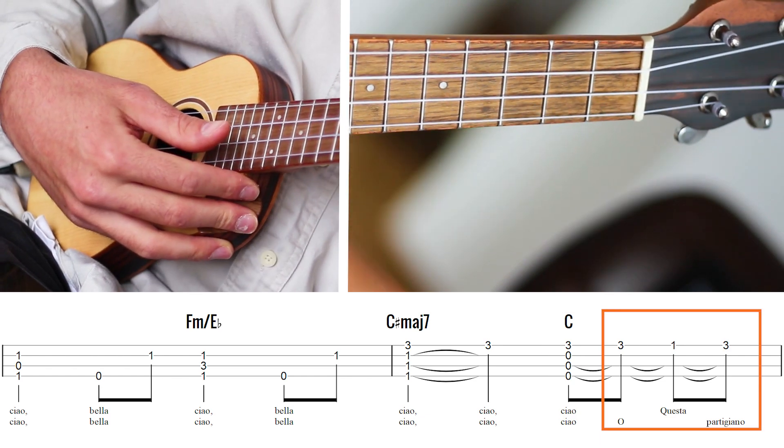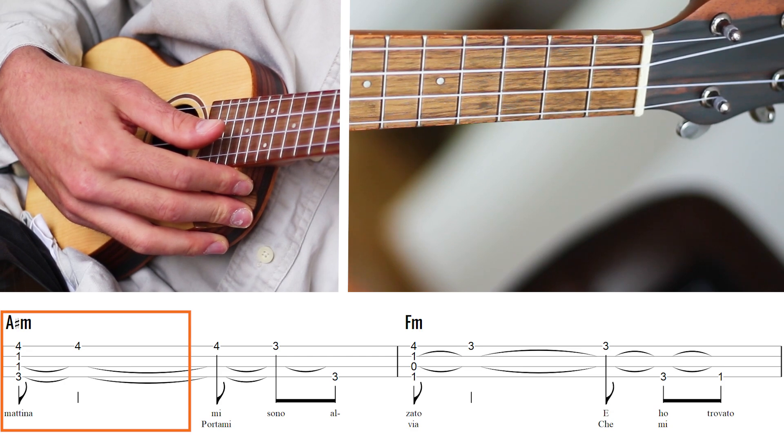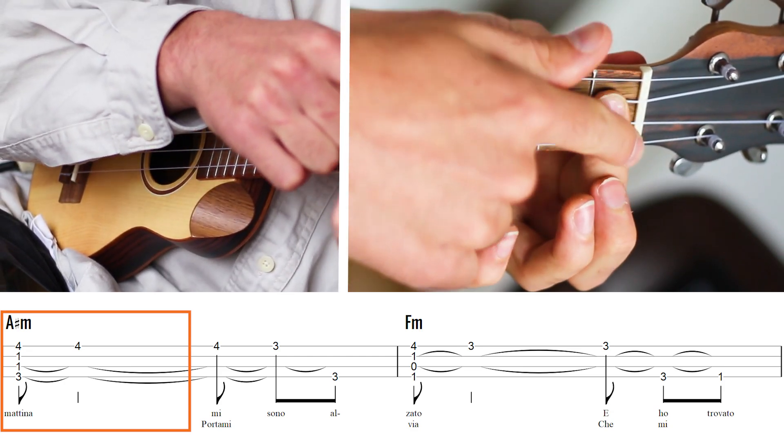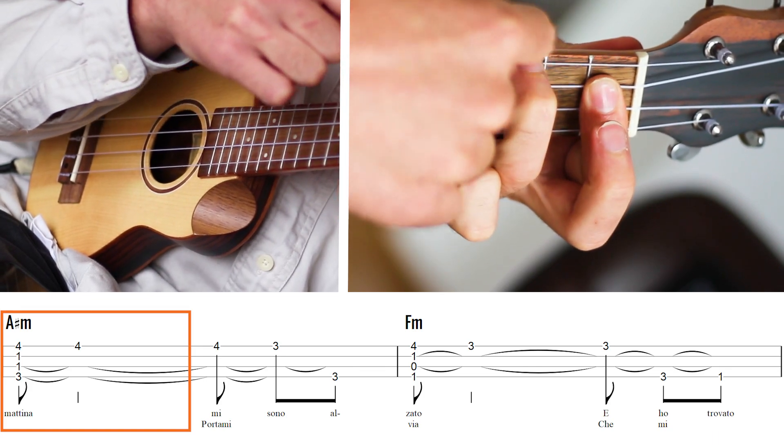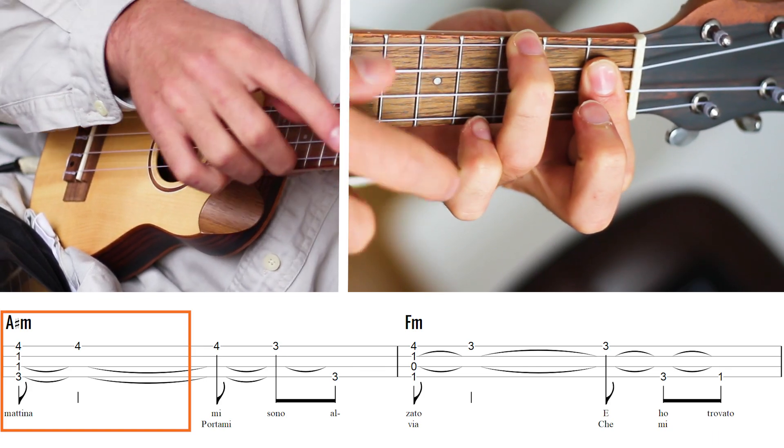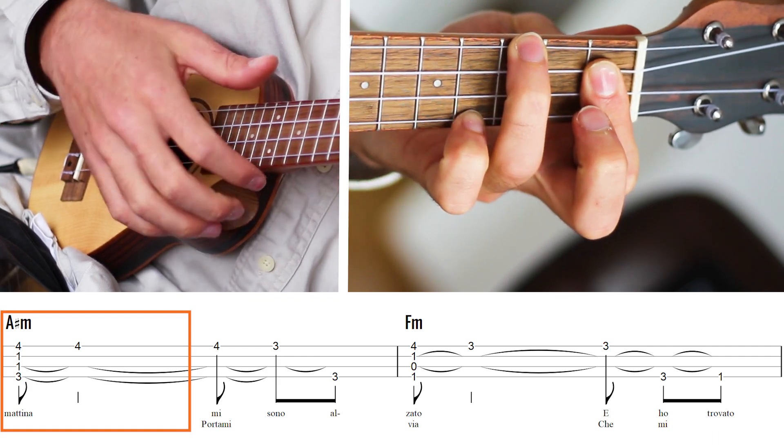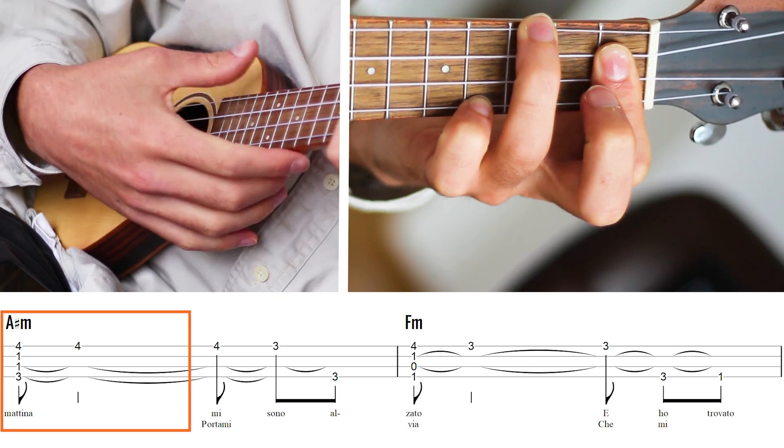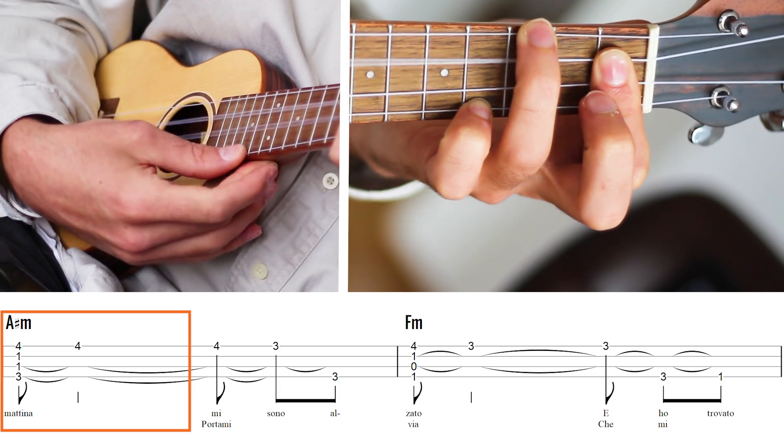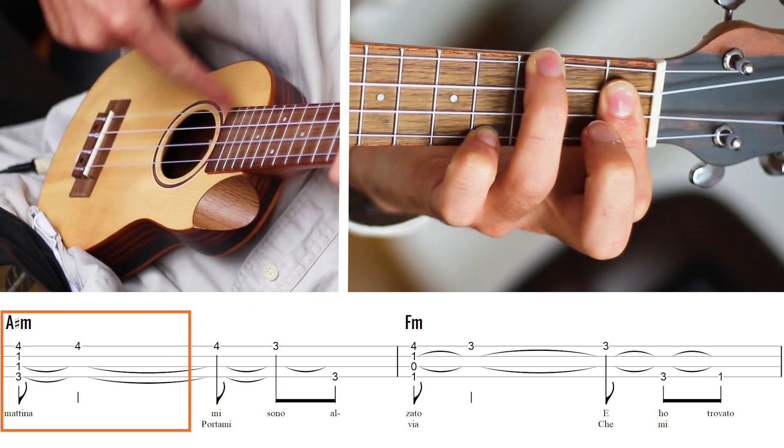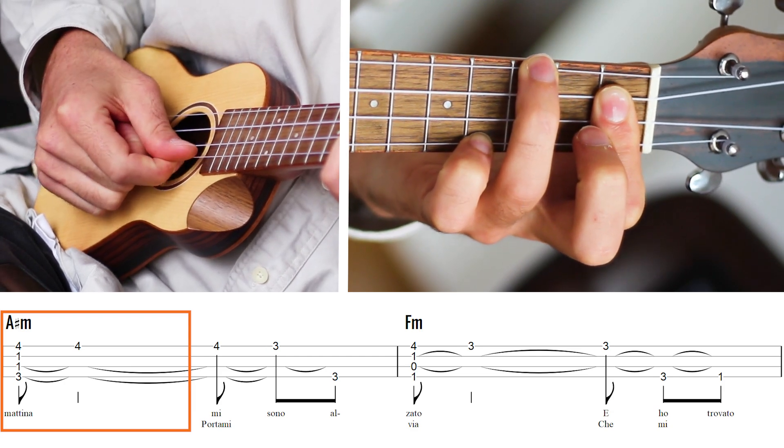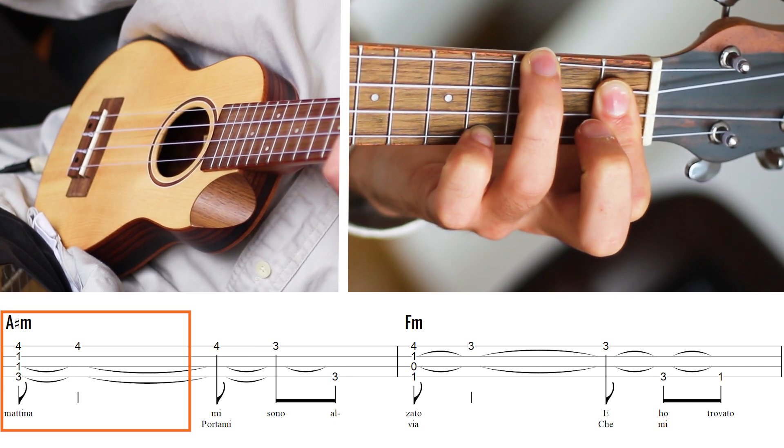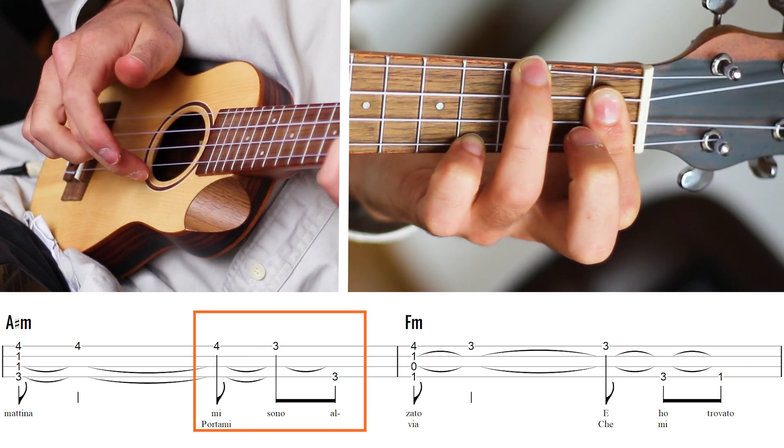And after that we are going to A sharp chord. So we're going to do A minor like this, barring here on the first fret, and with the ring finger on the third fret of the G string, and also the pinky on the fourth fret of the A string. And what I'm doing is playing the whole chord, and then on the up strum, I'm trying to accent more on the A string only.